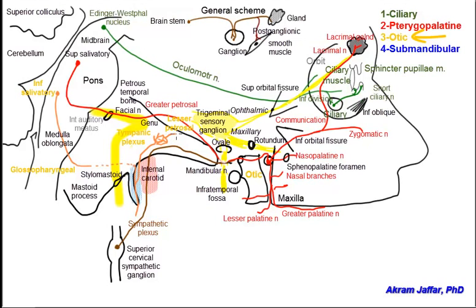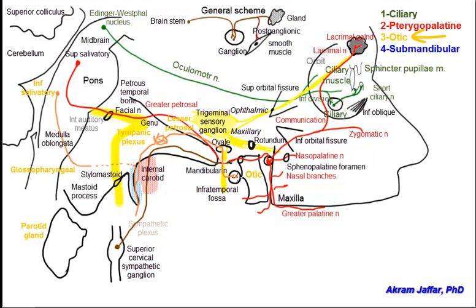The lesser petrosal nerve leaves the petrous temporal bone into the middle cranial fossa, where it is located lateral to the greater petrosal nerve. The nerve heads toward the foramen ovale, which leads it into the infratemporal fossa where the otic ganglion is located. The preganglionic fibers carried by the lesser petrosal nerve synapse in the ganglion, and the postganglionic parasympathetic secretomotor fibers are distributed to the parotid gland via the auriculotemporal nerve, which is a branch of the mandibular nerve.